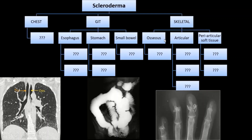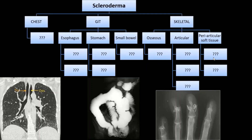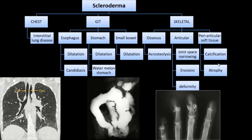What do you do? Acro-osteolysis. What do you do? Narrowing and erosion. What do you do? Calcification. That's it.